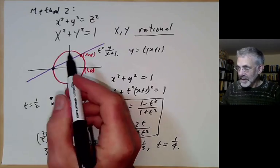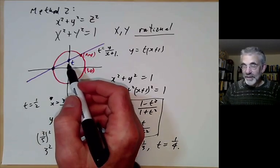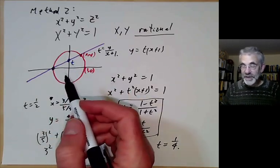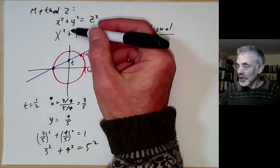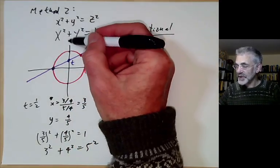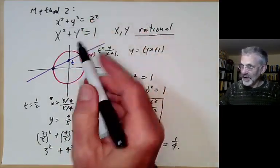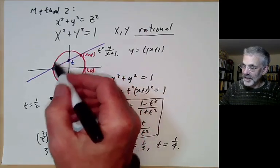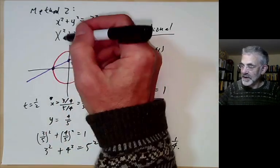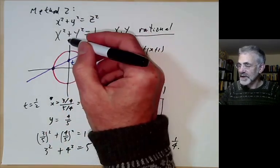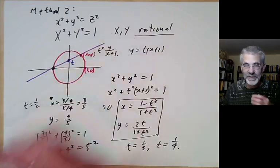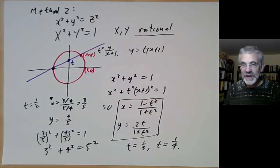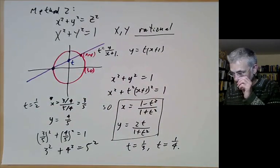Method 2 shows us that the solutions more or less have the structure of a straight line, because we can convert points on a circle to points on the y-axis. More precisely, it's a straight line plus a point — or in projective geometry, a projective line.